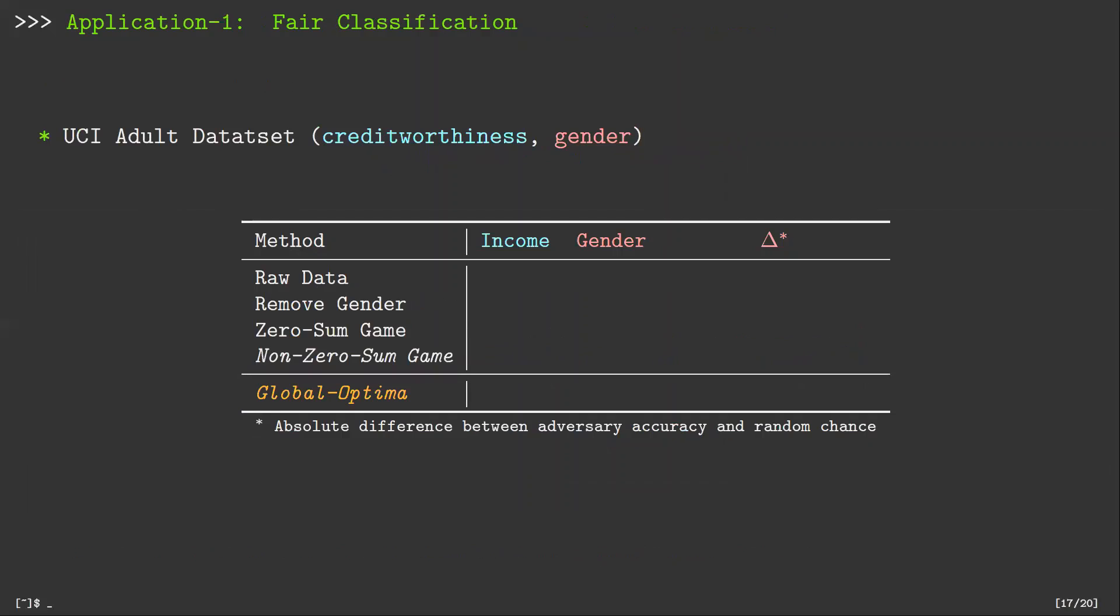Now, let's look at some experimental results. In the first experiment, we considered the fair classification of income on UCI adult dataset, where the sensitive attribute is gender. The naive classification results in gender detection accuracy of 98%. Simply removing the gender information from raw data still results in 83% of gender detection accuracy. A state-of-the-art adversarial representation learning can considerably obscure gender information. Its adversary accuracy is only 0.3% different from random chance. On the other hand, our approach can hide the gender information perfectly.